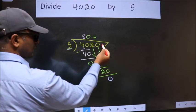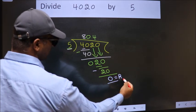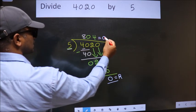No more numbers to bring it down. So we stop here. This is our remainder. This is our quotient.